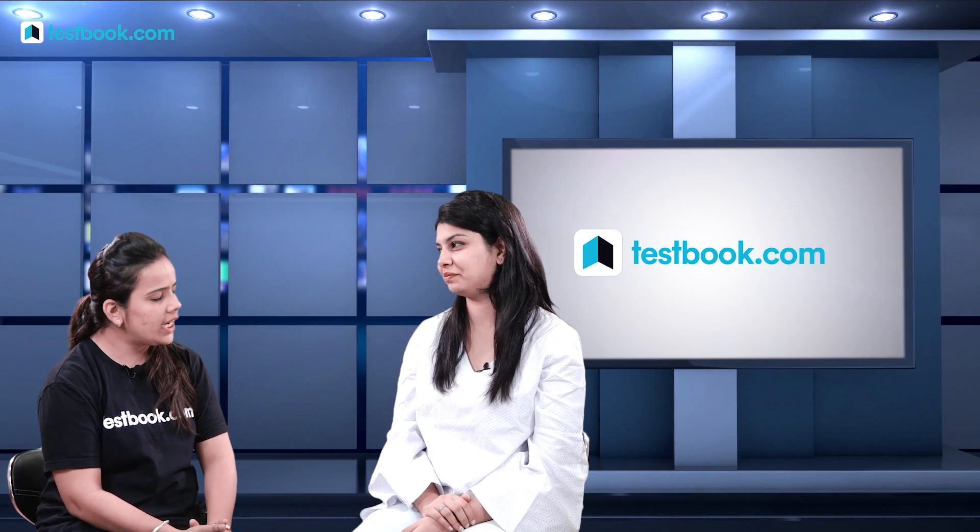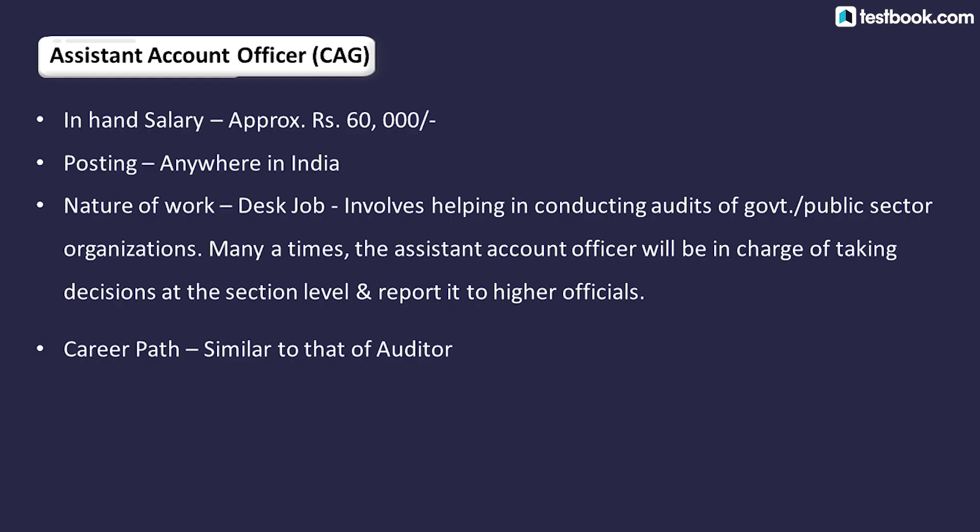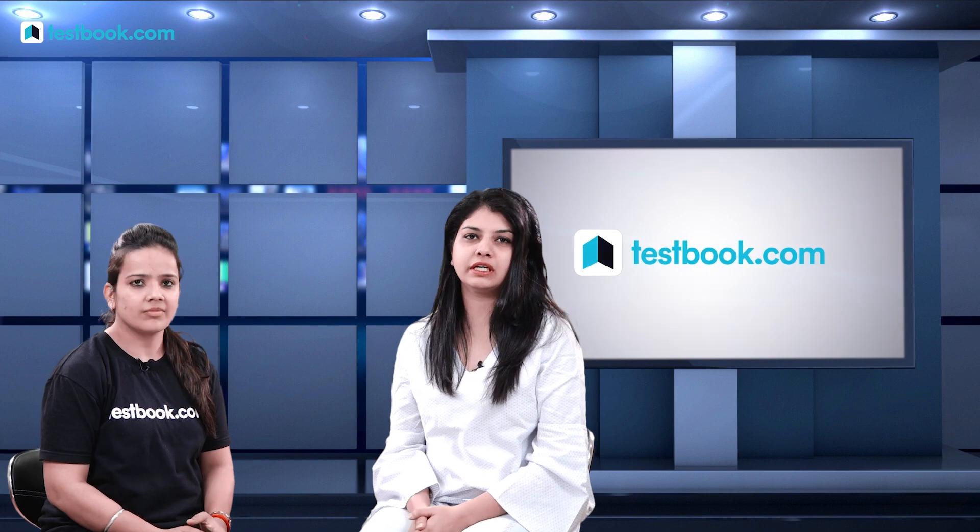The other post in the 4800 grade that SSC has added is the Assistant Account Officer. The work of this post is also to audit central and state government accounts. There will be some travel at the time of auditing. The department is also CAG. For promotions: first Audit Officer, then Deputy Audit Officer, then Senior Audit Officer, and retirement. Overall, a simple and decent job.